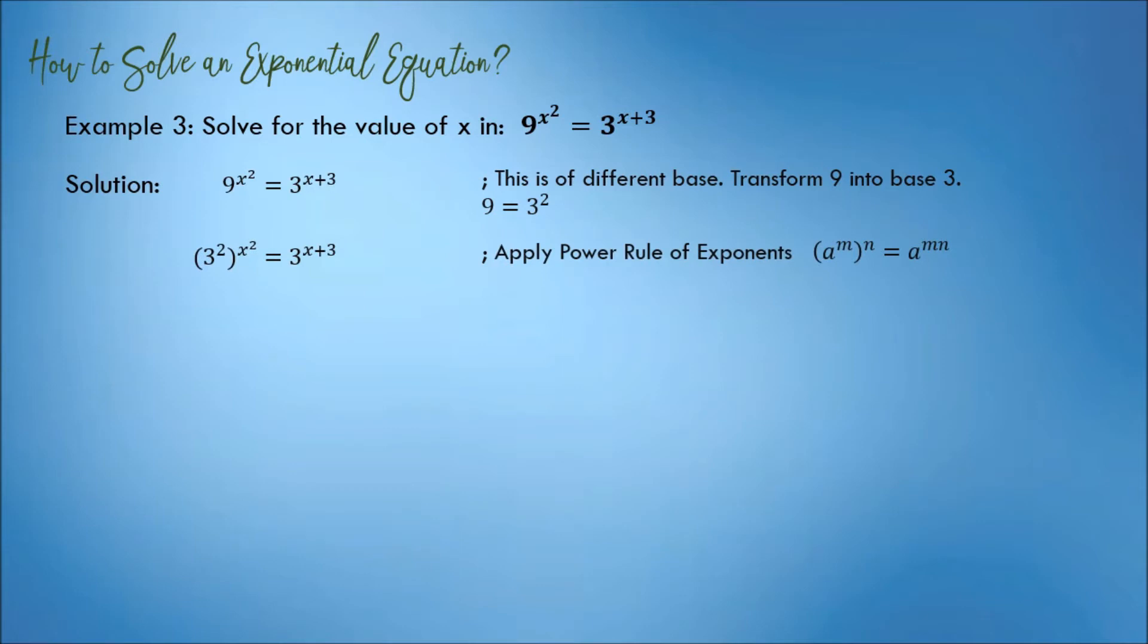The equation becomes 3 squared raised to x squared is equal to 3 raised to x plus 3. Next, apply the power rule of exponents. Multiply 2 to x squared.